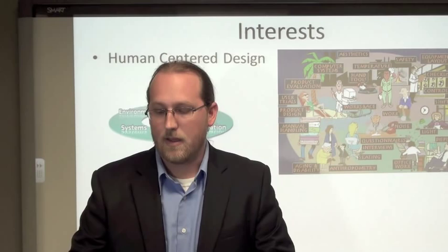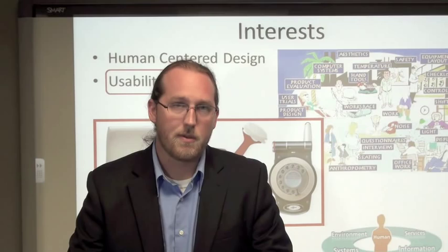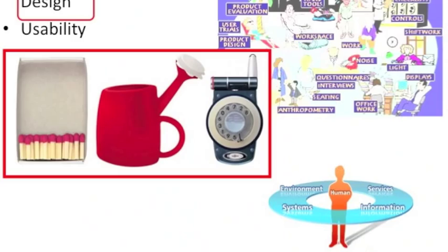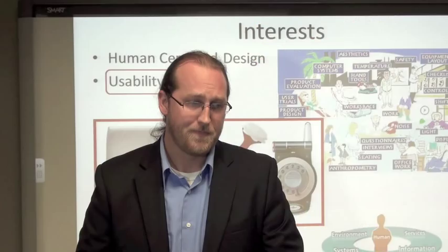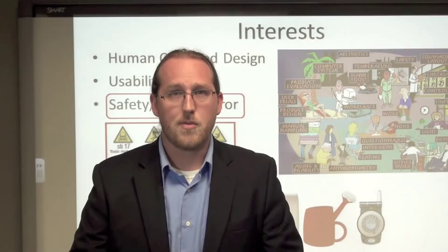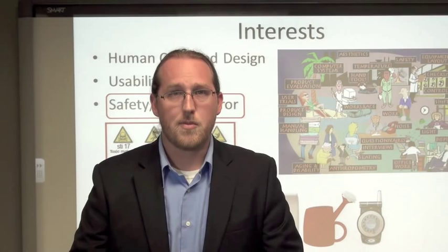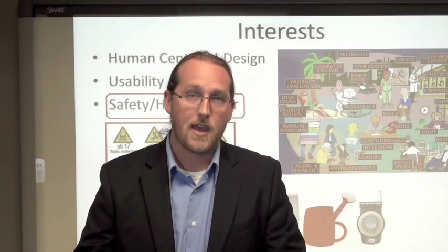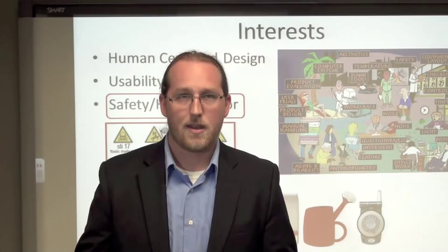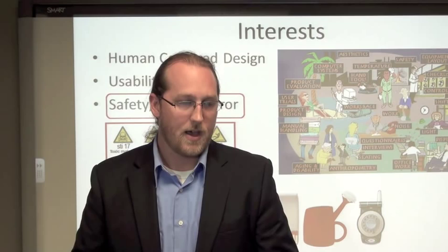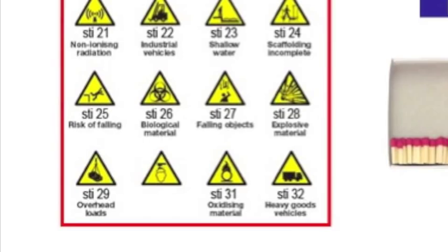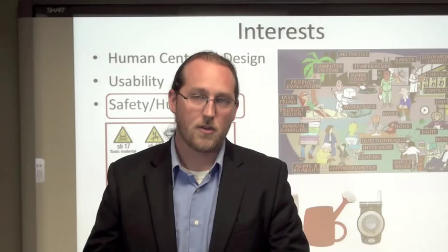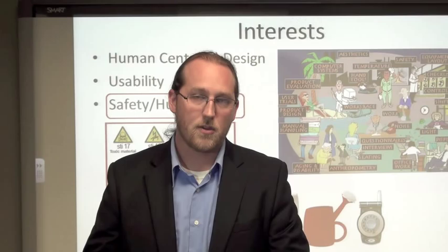We're also interested in usability — how usable is a product that we buy? These are some farce examples of poor usability or products that would do poorly on a usability test. Obviously, these matches would warrant a lawsuit of some type. We're interested in safety and human error — we want to design products or systems so that they are safe and people can't make errors. But if there's a chance they do, we also want to design warning labels that reduce the chances of making an error. If you don't work at a construction site and are familiar with the signage, the warning labels may do you no good. The only way to know if warning signs are effective is to do some type of testing on them.